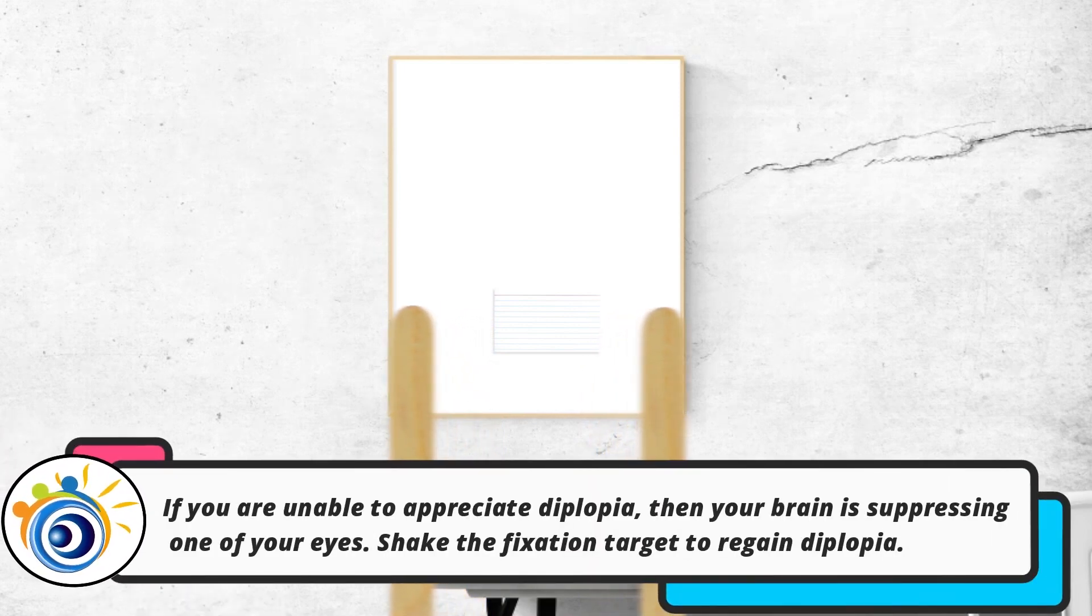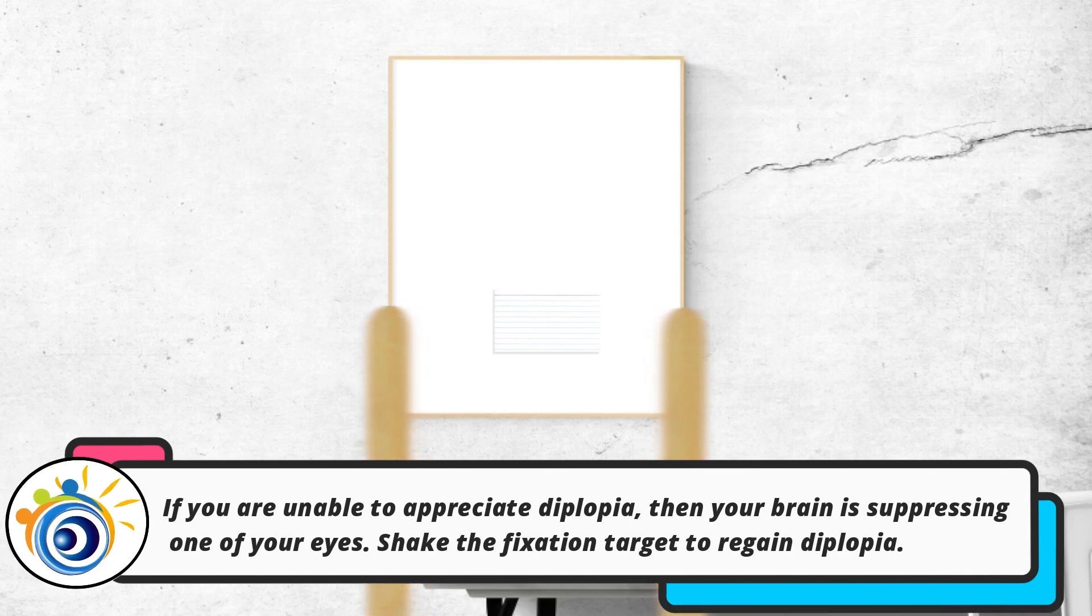If you are unable to appreciate diplopia, then your brain is suppressing one of your eyes. Shake the fixation target to regain diplopia.